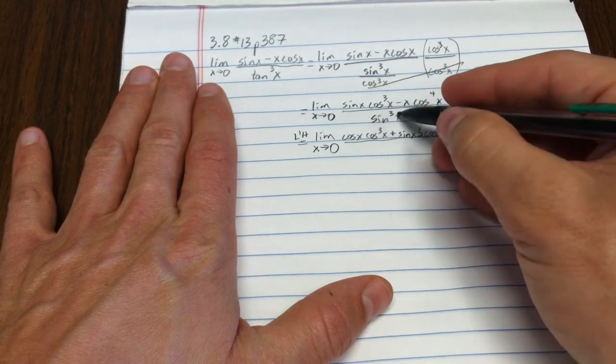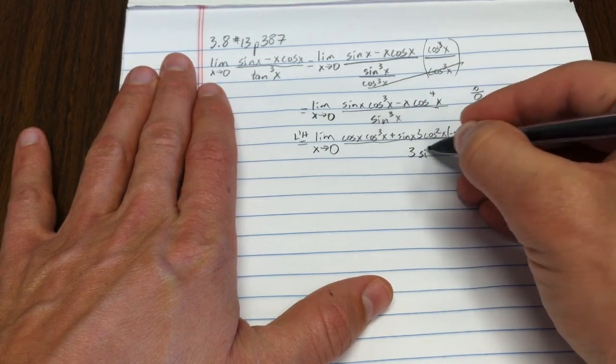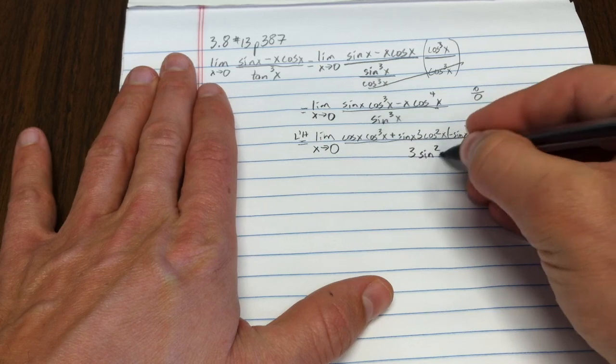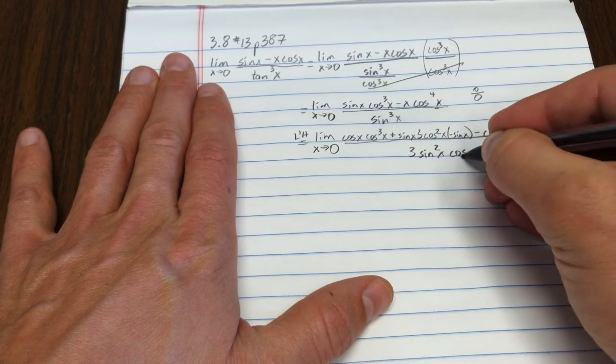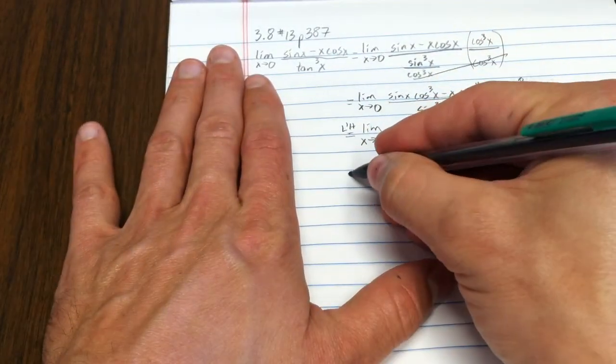Okay, compared to that, taking the derivative of sine to the third x is quite easy. 3 sine squared x times, using the chain rule, cosine x. Got to be careful there.